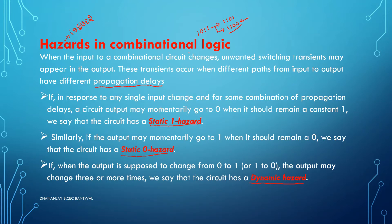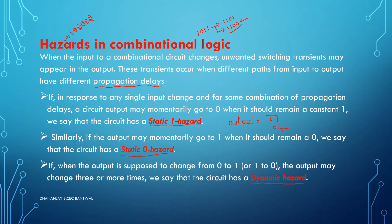Static 1 hazard: in response to any single input change and for some combination of propagation delays, a circuit output may momentarily go to 0 when it should remain a constant 1. You are expecting your circuit to give a high output, but the circuit output might go to 0. Your output should be 1, but due to propagation delays the output reduces to 0 — that is called static 1 hazard.